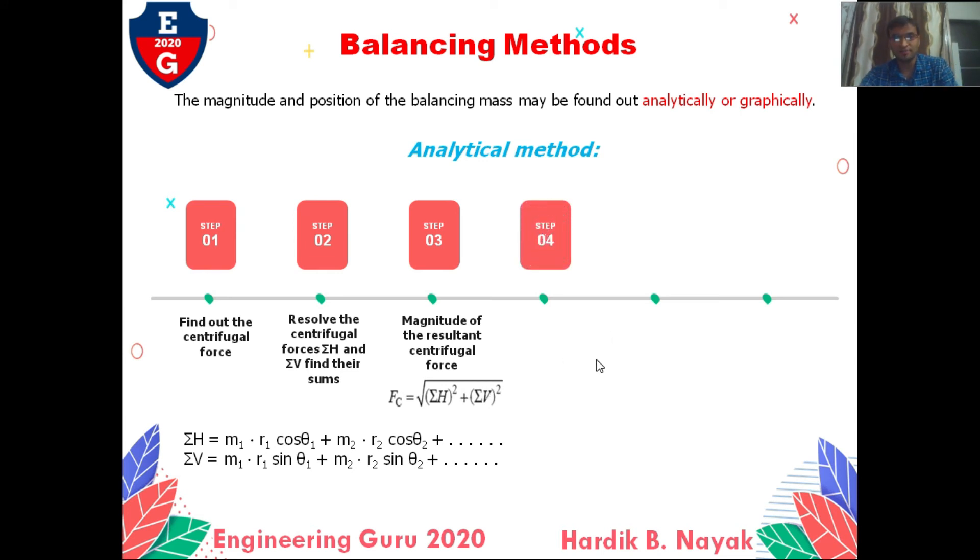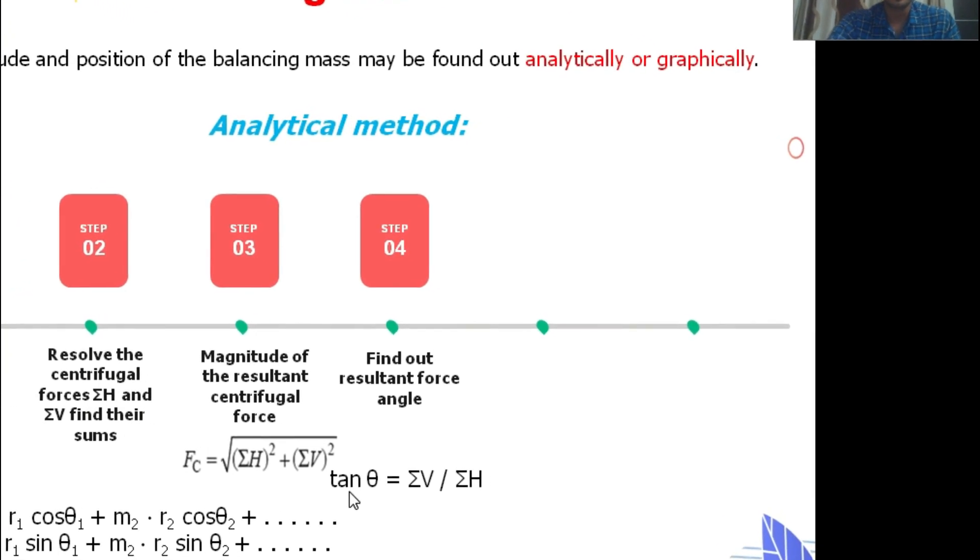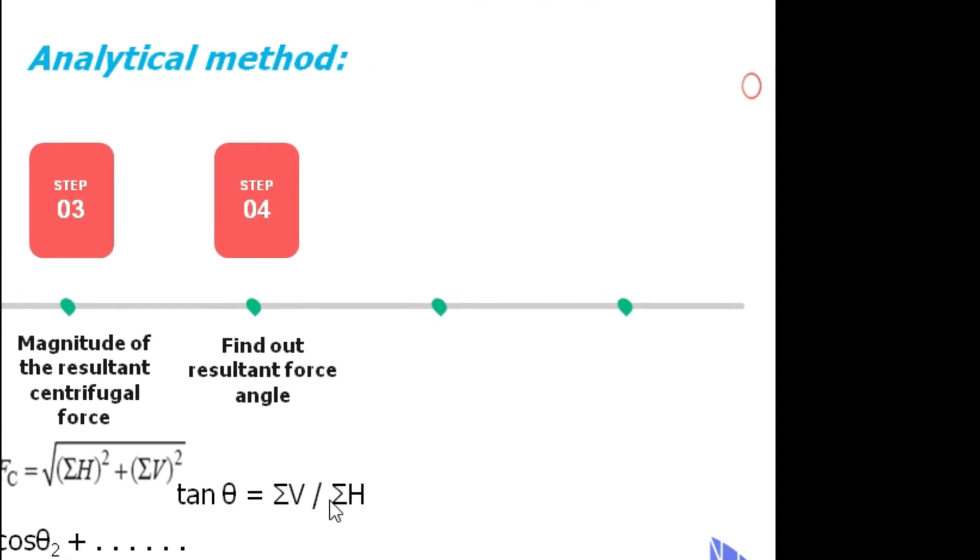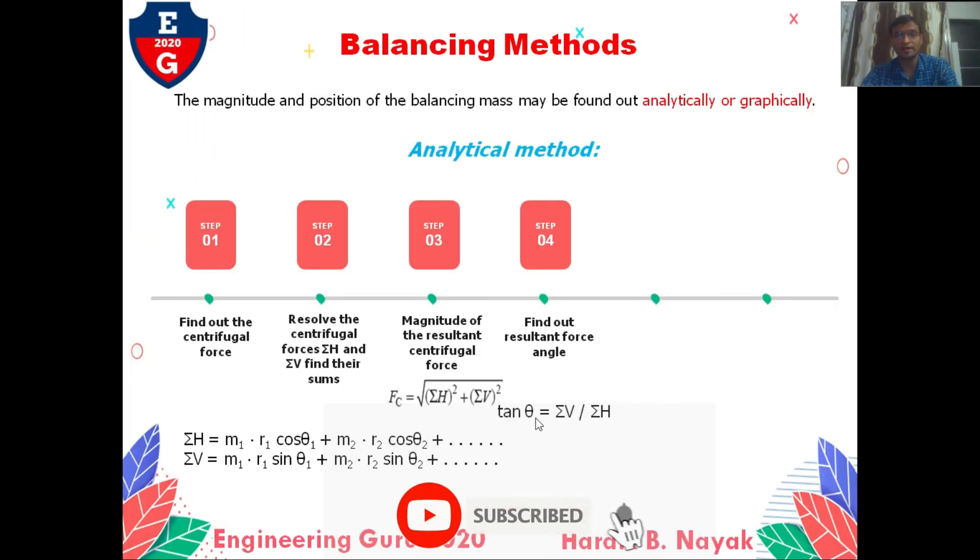Fourth step: find out the resultant force angle theta. Tan theta equals summation of V divided by summation of H. So from this, we find theta equals tan inverse of summation of V by H.